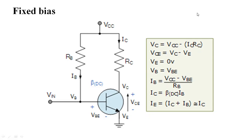After understanding the importance of biasing, we have three types of bias: fixed bias, collector bias, and voltage divider bias.